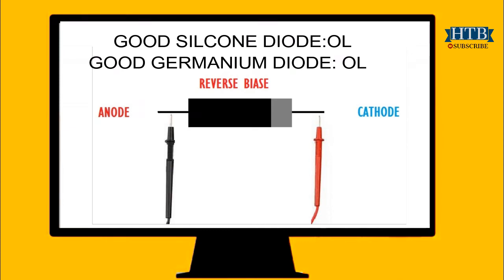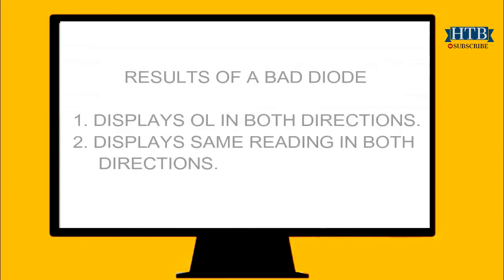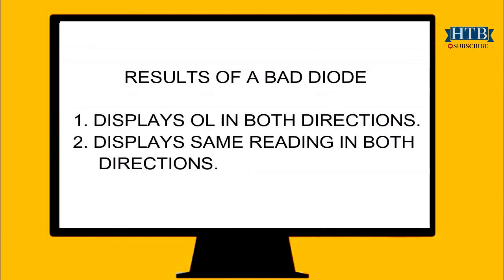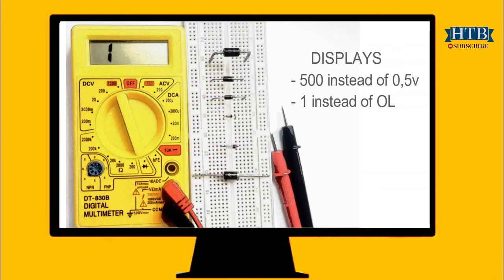The multimeter displays OL when a good diode is reverse biased. The OL reading indicates the diode is functioning as an open switch. A multimeter will display OL in both directions when the diode is open. A shorted diode has the same voltage drop reading. Note: with this type of multimeter you will not get readings like 0.5 or OL — instead it displays 500 instead of 0.5, and 1 instead of OL.